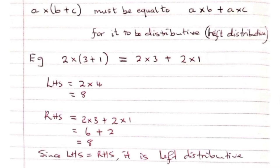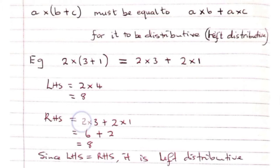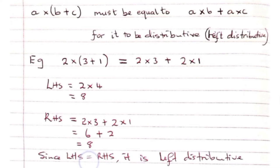Right-hand side: 2 times 3 plus 2 times 1 gives 6 plus 2, which is 8. Therefore, left-hand side equals right-hand side. Hence, it is left distributive.